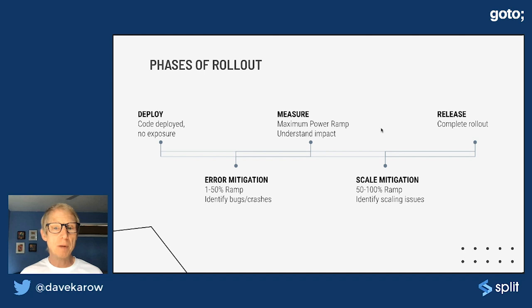Then we're going to ramp up. And we might pause along the way to do a scale mitigation. We might get to 60, 70, 80% and hold for a while and wait through a peak traffic period to make sure that we can handle scale as well as that we don't have bugs and that we're making the user behavior change the way we were hoping. And then we're released.